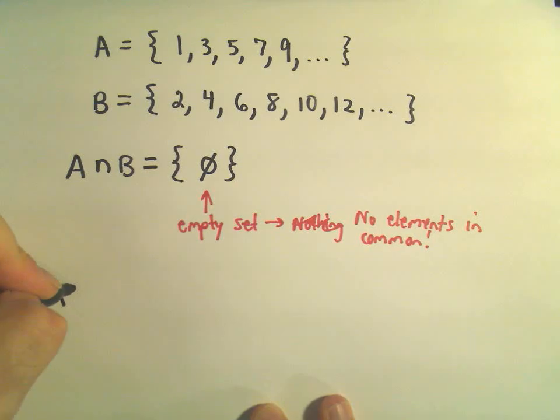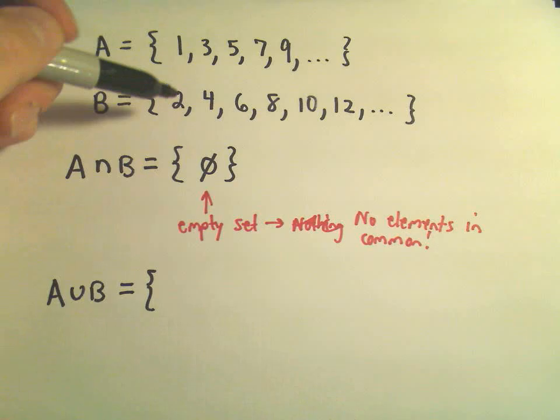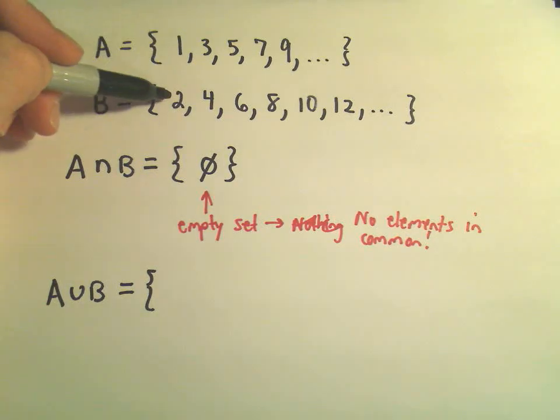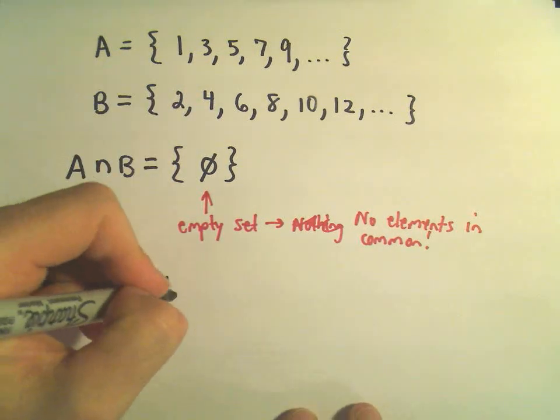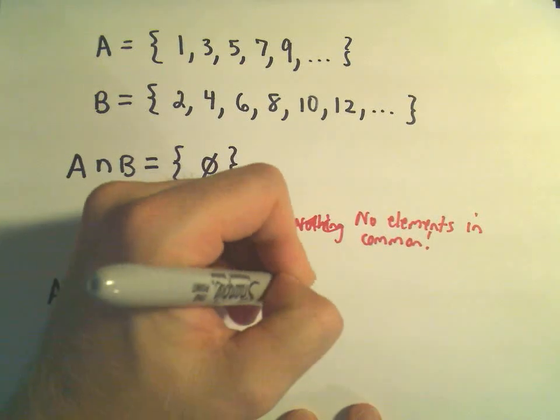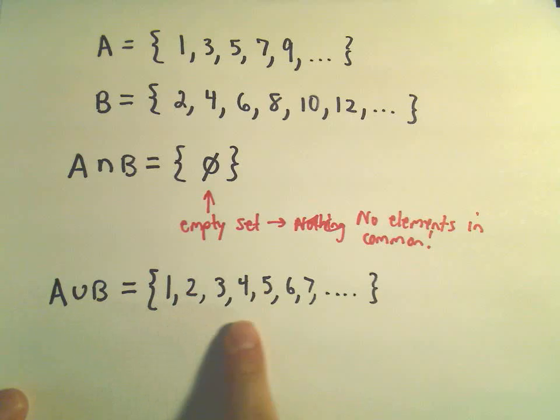But if we do A or B, A union B, well, in this case, we're going to get all the odd numbers greater than 0, all the even numbers greater than 0. So, the union would simply be 1, 2, 3, 4, 5, 6, 7, etc. So, basically, we're going to get all the natural numbers in this case, all the counting numbers, and that would be the union in this case.